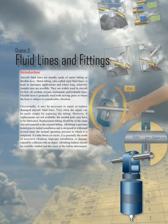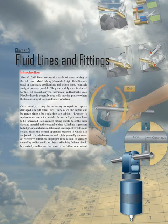Chapter 9: Fluid Lines and Fittings Introduction. Aircraft fluid lines are usually made of metal tubing or flexible hose. Metal tubing, also called rigid fluid lines, is used in stationary applications and where long, relatively straight runs are possible. They are widely used in aircraft for fuel, oil, coolant, oxygen, instrument, and hydraulic lines.